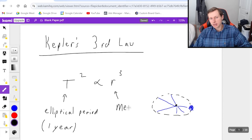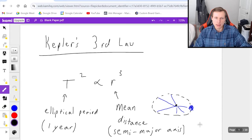But r represents the mean distance, which I've also seen referred to as the semi-major axis. If you don't know what that means, it really doesn't matter. We're just going to treat it like the mean distance or the average distance from the sun.